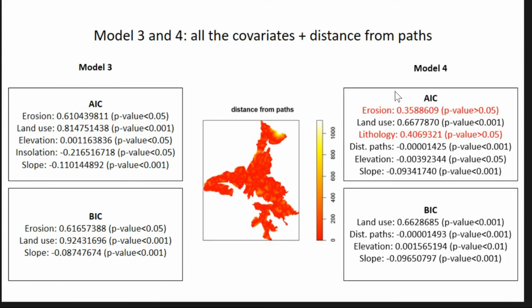We also added an additional covariate — distance from paths — which I explain here. This is distinct from the erosion map: it is the distance from paths, including main paths and tarmac roads today. Running the same AIC and BIC on this Model 4, we found that AIC and BIC diverge significantly: some parameters in the AIC are not significant or only poorly significant, whereas four parameters are all very significant, and slope is again very strong.